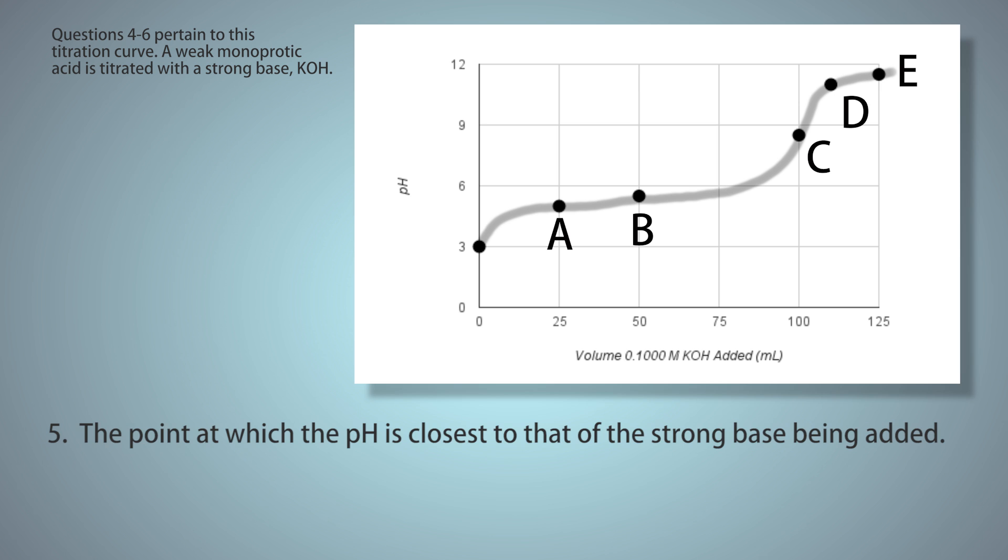Question 5: The point at which the pH is closest to that of the strong base being added. This is going to be point E. Notice we are past the equivalence point, where all the acid has been neutralized. Past that point, more and more base is being added, more and more of that KOH.